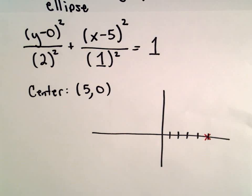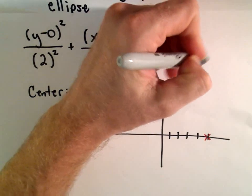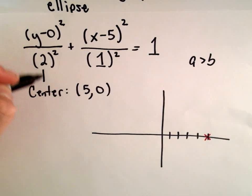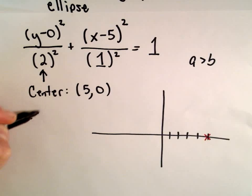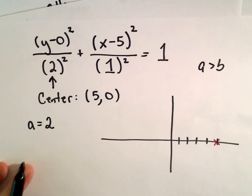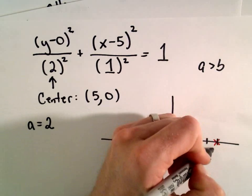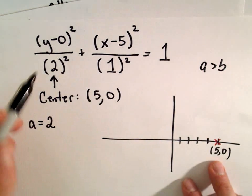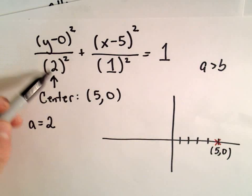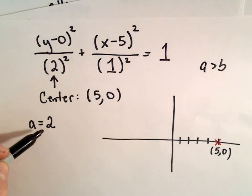Now to get the vertices, we can look at our a value and our b value. a is greater than b. So in this case, our a value is going to equal positive 2. So I'm going to go ahead and put 5, 0 there. The number that's being squared is 2. That's our a value.